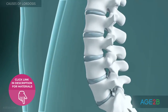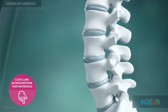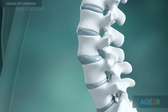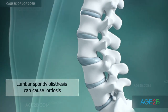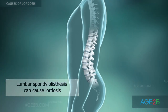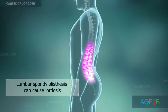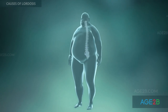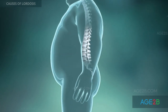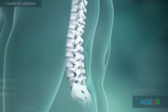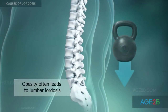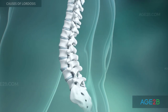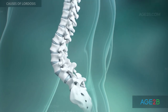Lumbar spondylolisthesis is also a possible cause of lordosis. This condition is the forward dislocation of a lumbar vertebra. Increased pressure on the spine due to obesity is another possible cause of lumbar lordosis.